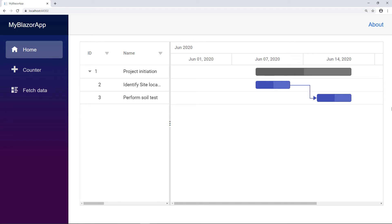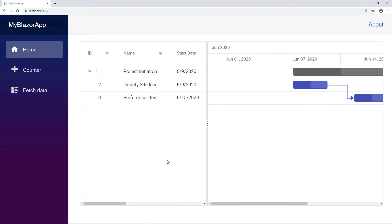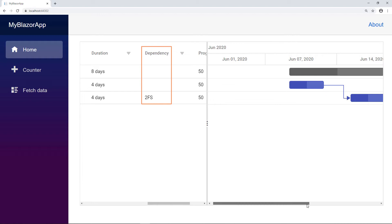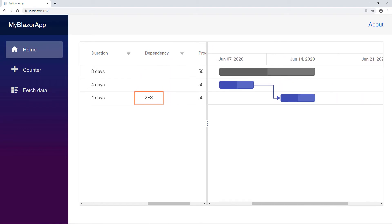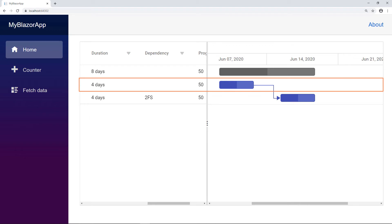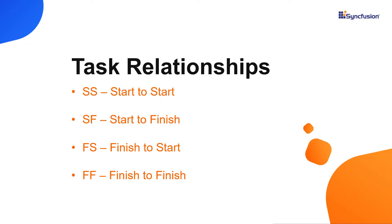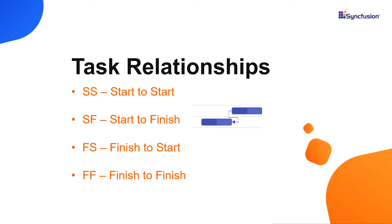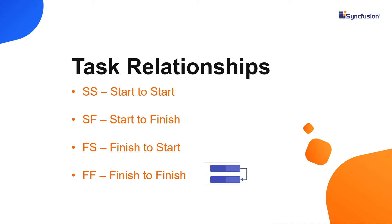You can see the Gantt chart with the task dependencies annotated as arrow marks — task 2 precedes task 3. In the tree grid, you can see the dependency column. For the third task, the dependency is added as 2FS. This means task 3 is preceded by task 2 in a finish-to-start relationship. Finish-to-start is the default task relationship. There are four types of task relationships: start-to-start, start-to-finish, finish-to-start, and finish-to-finish.